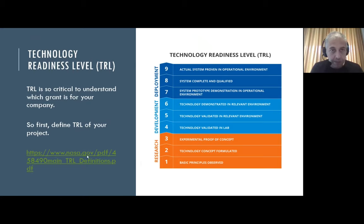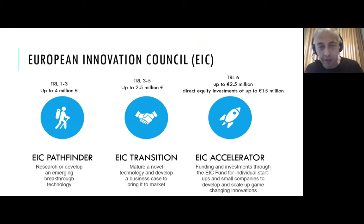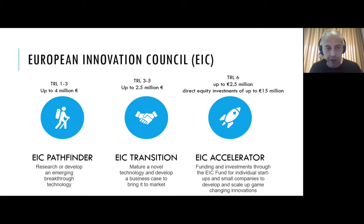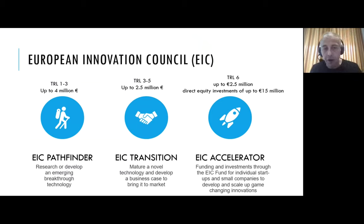Now we will talk about the European Innovation Council — it is a brand new council of the European Union. There are three main grants in this framework. The first is EIC Pathfinder, which is between TRL one and three — essentially a research and development grant. The technology should be an emerging breakthrough. Generally, three different companies from three different European Union countries come together and develop a research project. It's a generous budget of 4 million euros. To apply, you must create a consortium with partners.